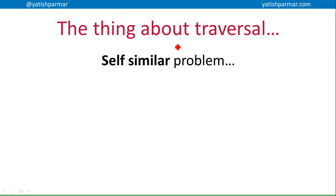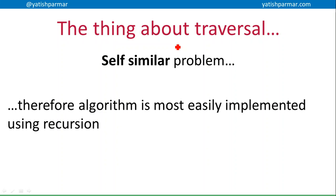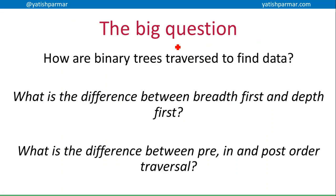As I've said several times, traversal is a self-similar problem. There are only three steps to each of pre-, post-, and in-order. Therefore, any algorithm for depth-first traversal is most easily implemented using recursion. We're going to see that in the next set of videos where we do the actual implementation. So you should now be able to explain how binary trees are traversed, the difference between breadth-first — outputting each layer at a time — and depth-first — outputting each branch in its entirety. And the difference between pre-, in-, and post-order traversal, plus the shortcut for working out what the output of a tree would be.